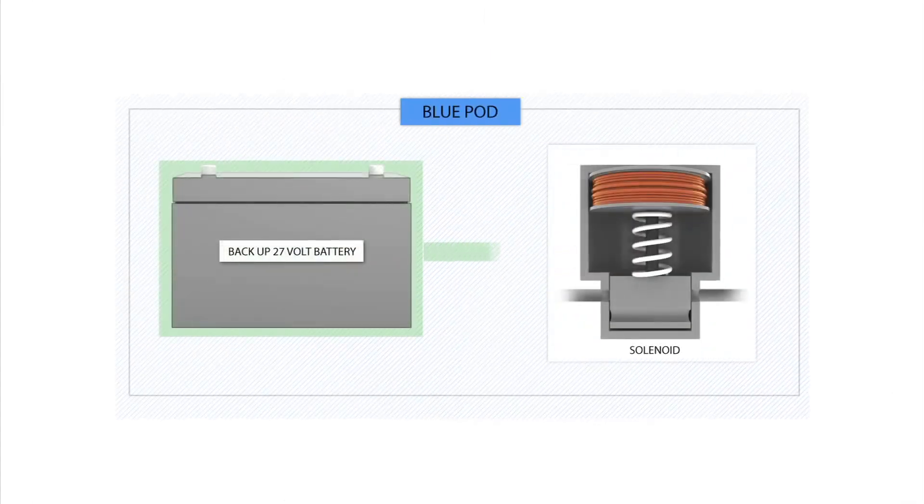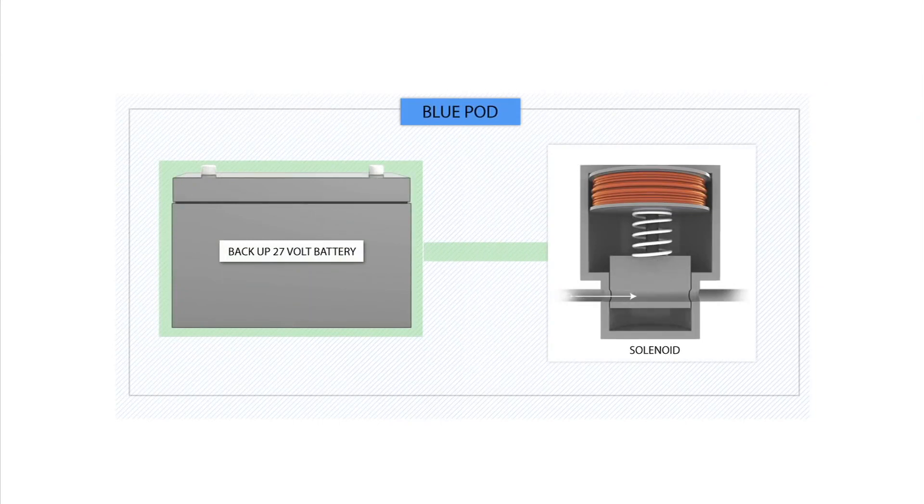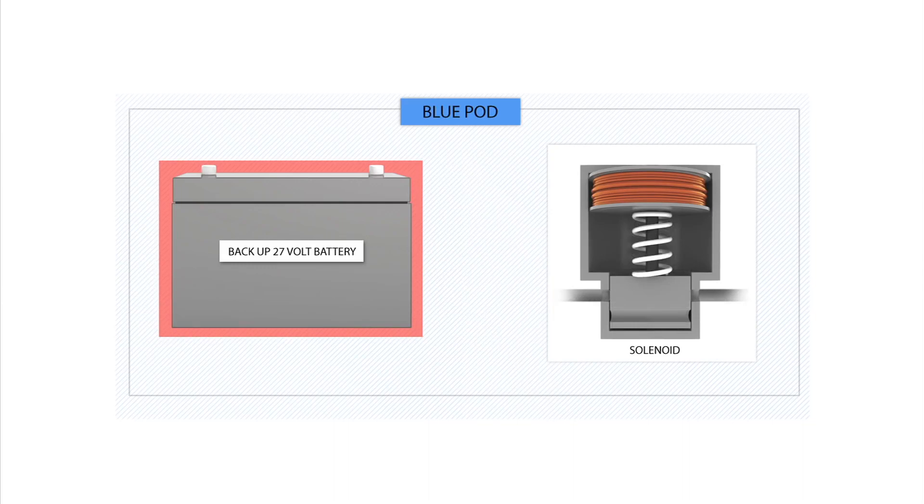However, evidence indicates the Blue Pod had been miswired at some time before the BOP was lowered onto the seafloor. This caused the pod's 27-volt battery to drain and made it impossible to operate the solenoid valve for the blind shear ram on the night of the accident.